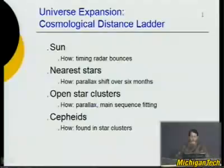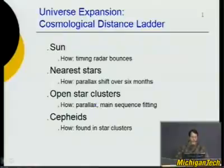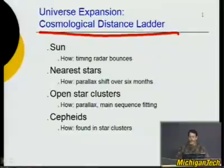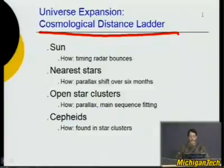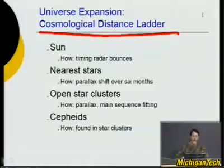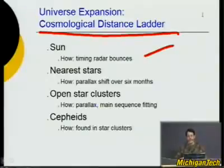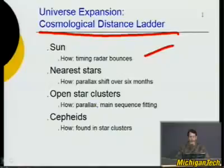It helps in determining the age of the universe to know how far away things are. Hubble's constant works for a while, but not inside our solar system. So we have what's called the cosmological distance ladder, where each rung tells us how to get further out in space. For instance, we can determine the distance to the Sun by bouncing radar off it — you send a radar pulse, it bounces back, and you time how long it takes. You cannot do this for distant galaxies millions of light years away; you'd have to wait millions of years for the pulse to return.